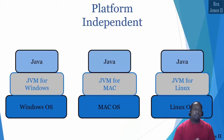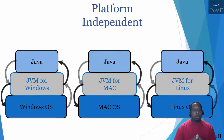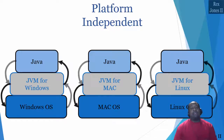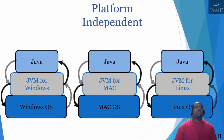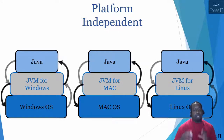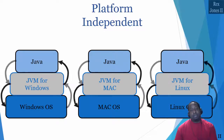JVM is a runtime system designed to execute bytecode. Bytecode is the output from a Java compiler. The purpose of bytecode is to provide instructions executed by the JVM. It was important for Java to create a JVM because different devices have different operating systems.